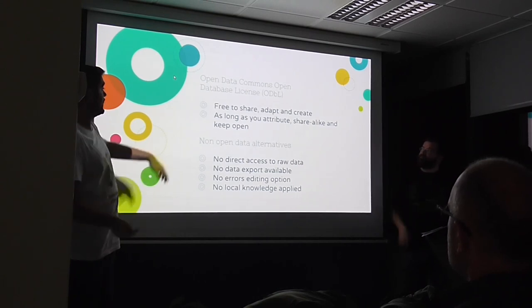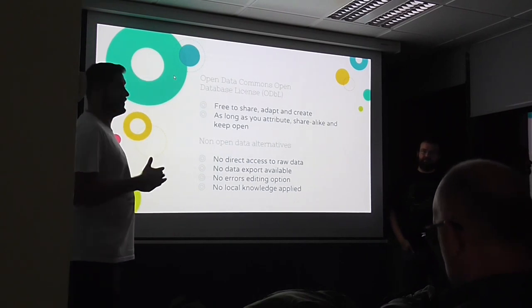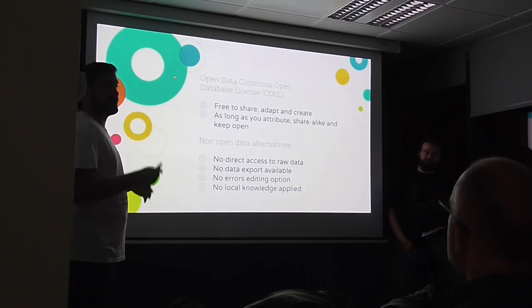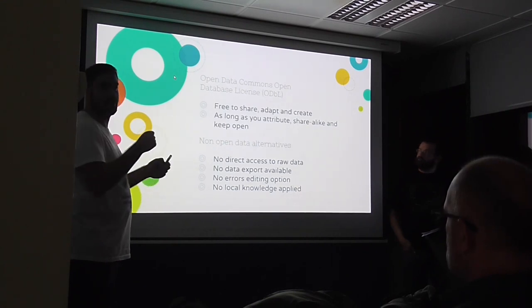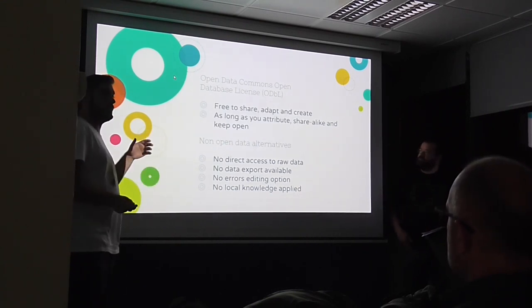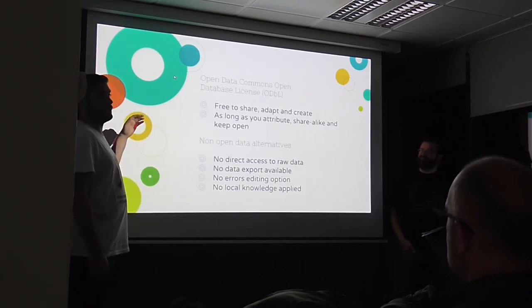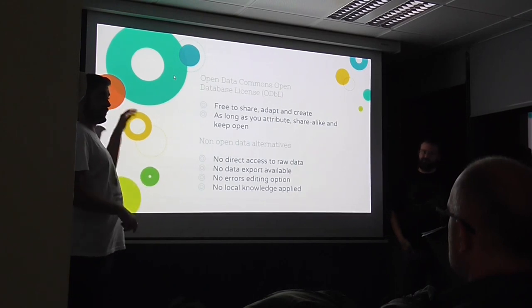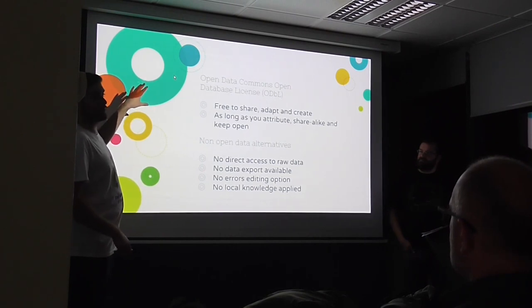In OpenStreetMap, we have this license — it's a kind of Creative Commons-like license. You are free to share, adapt, and create. You can edit all the map and change different things. Everything people upload is public, so if you are using information from other suppliers, it has to be public, because once you upload it into OpenStreetMap, it's going to be public to everyone.